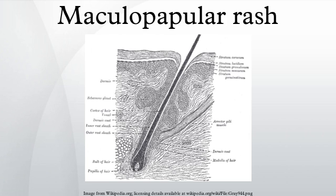A maculopapular rash is a type of rash characterized by a flat, red area on the skin that is covered with small confluent bumps. It may only appear red in white-skinned people. The term maculopapular is a compound: macules are small, flat discolored spots on the surface of the skin, and papules are small, raised bumps. It is also described as erythematous, or red.